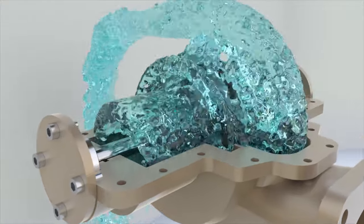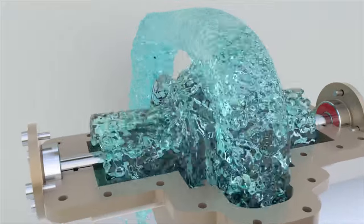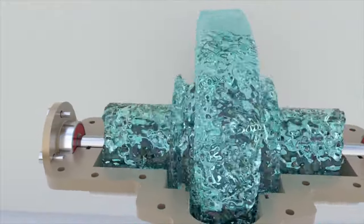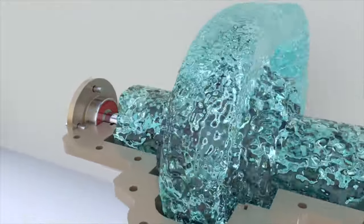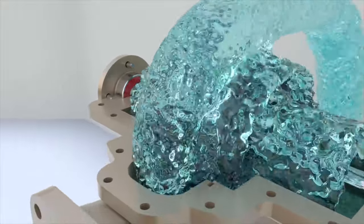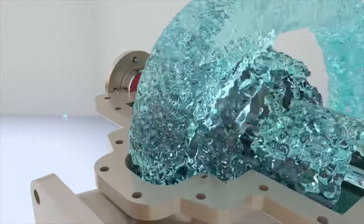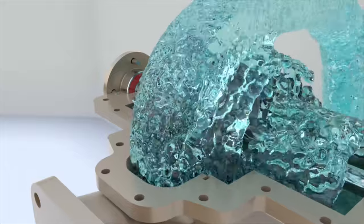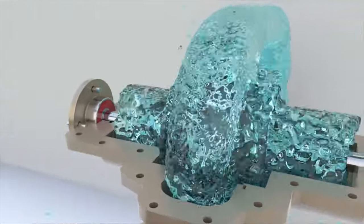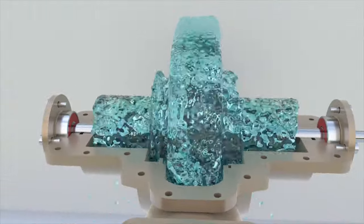A double suction impeller allows liquid to enter the impeller blades from both sides. Thus, we have two pumping units without significantly increasing the weight and dimensions of the pump. This scheme is relevant for pumps with high capacities because the pumping units are installed parallel.